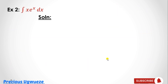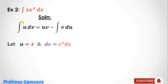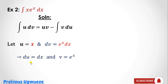Next example: integrate x·eˣ with respect to x. Here, either term can be easily integrated or differentiated. We choose u = x, so the remaining part, eˣ dx, becomes our dv. Differentiating u = x gives du/dx = 1, so du = dx.